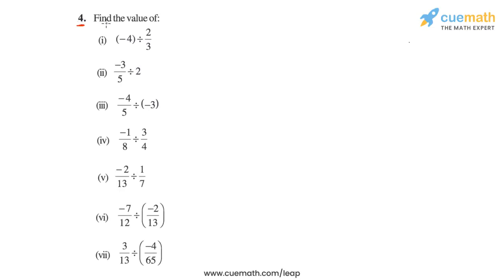In question 4, we have to find the value of each of the following division expressions involving rational numbers. To do this, we will make use of the fact that rational numbers can be divided just like fractions. To divide one rational number by another, we multiply the first rational number (the dividend) with the reciprocal of the second rational number (the divisor).